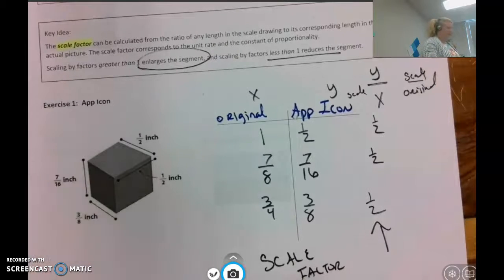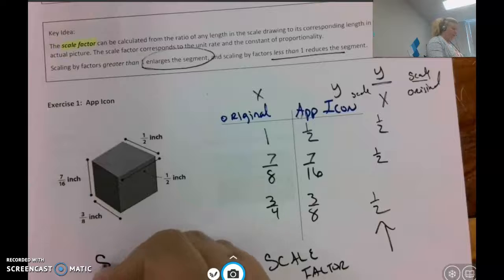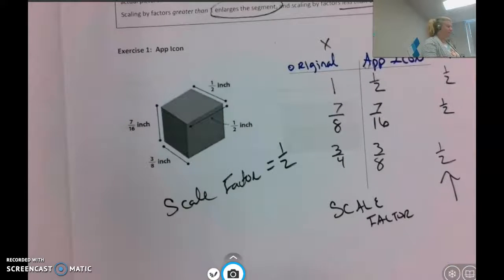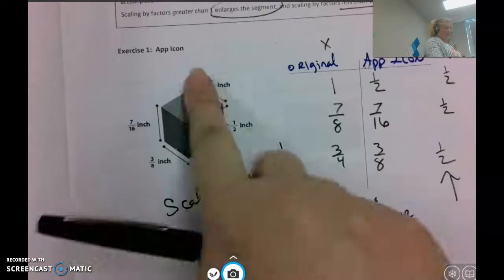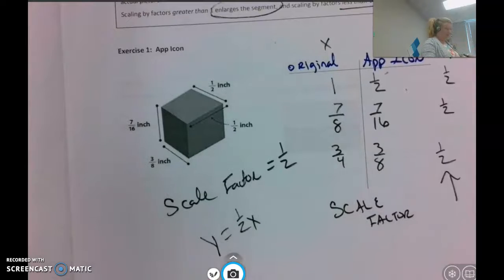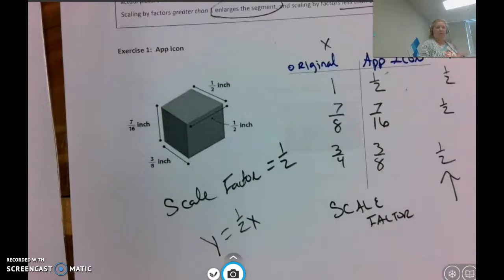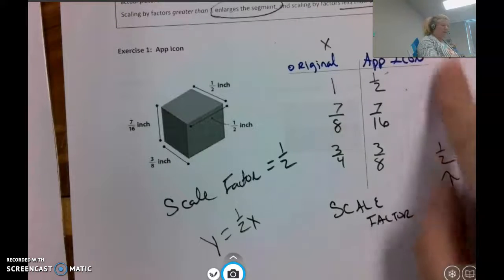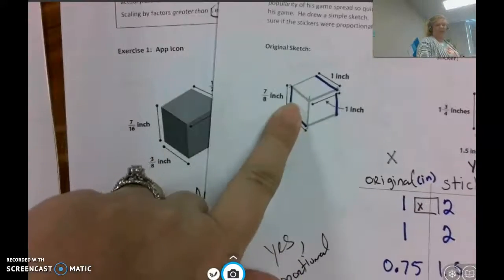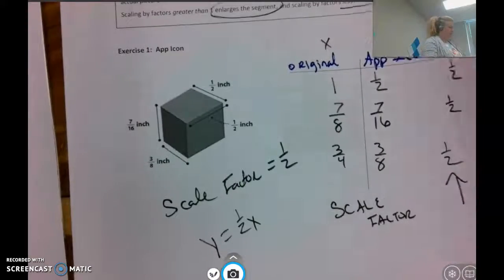I do have a constant unit rate, which in this case is my scale factor. So my scale factor is 1 half. In other words, the app icon is half the size of the original sketch. If I wanted to create an equation that could help me determine the length of a segment of the app icon, I could do y equals 1 half x. Not necessary, but I always like to throw that out when I'm dealing with proportional relationships. Our scale factor is 1 half. We found that by doing the scale divided by the original, organizing our information on a table. The original did come from here, which was the previous page.